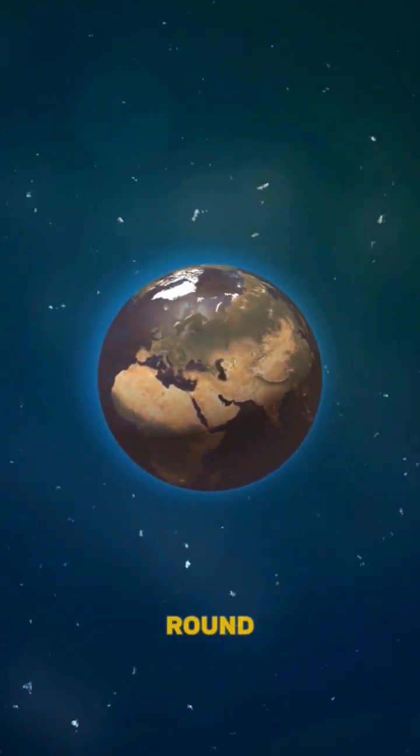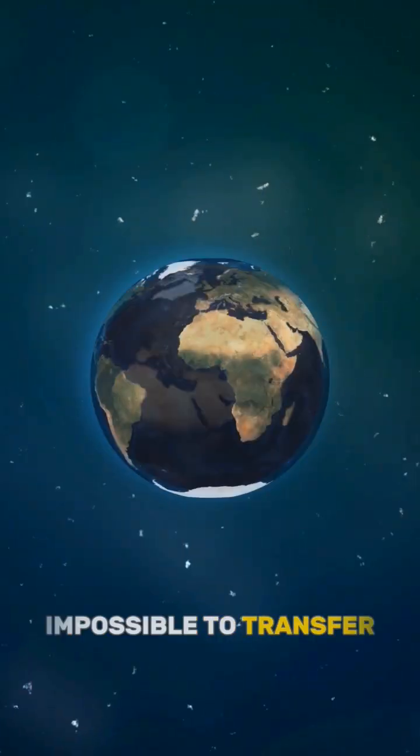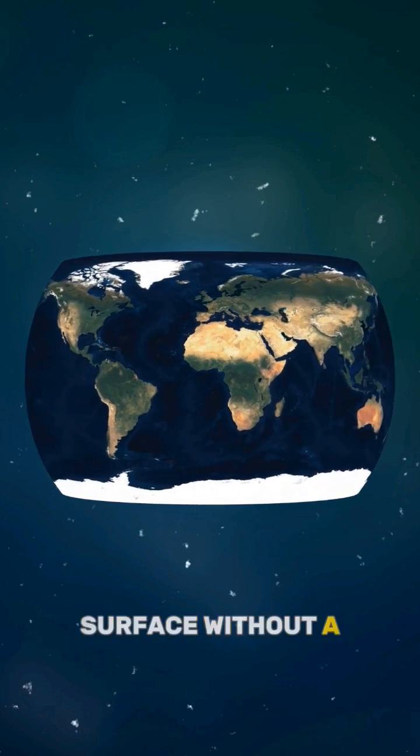This is because our planet is round, and it is impossible to transfer the surface of a sphere to a flat surface without a series of distortions.